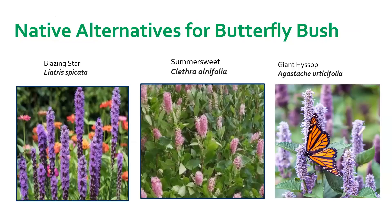When looking for a native alternative to butterfly bush, think about what makes it attractive: the purple color, the shape of the flower, the foliage. But remember it's really about the habitat and the pollinators. Some native alternatives are summer sweet, blazing star, and giant hyssop, which have beautiful fragrant flowers that attract many pollinators and hummingbirds. All three are also drought-tolerant, disease-resistant, and act as natural pest repellents. An added benefit is that they provide seeds for overwintering birds.